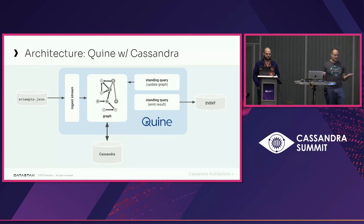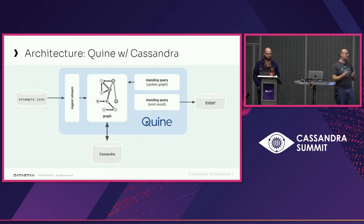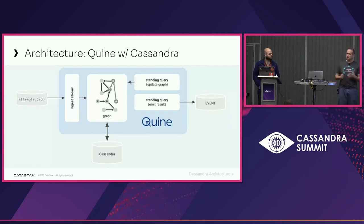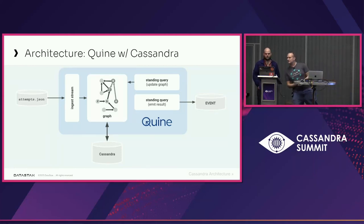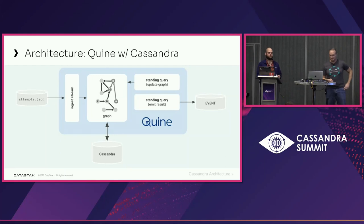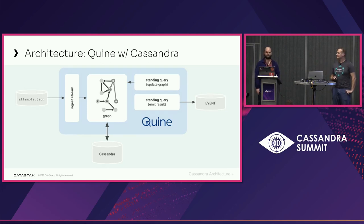When you're using Quine with Cassandra, you have your data coming in, being ingested, streaming into the graph. The Graph Engine actually interacts with Cassandra directly. There are aspects of Quine that include things like a standing query. A standing query is a piece of terminology to refer to: define the structure you want, and define the action you're going to take in response to that structure. That's all a standing query is — the combination of those two concepts.